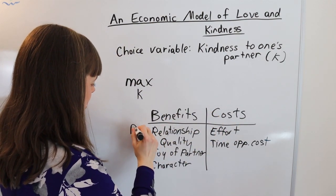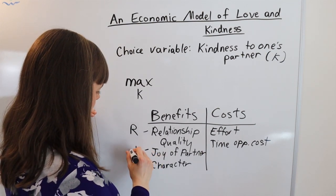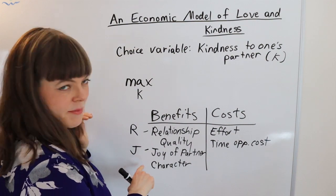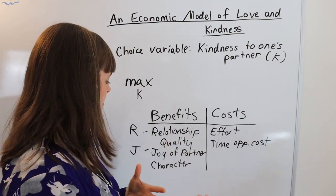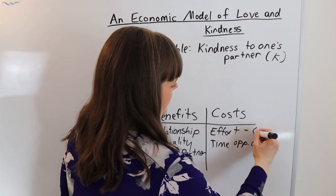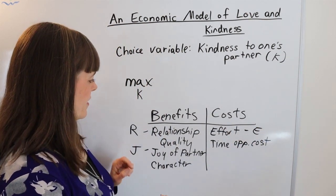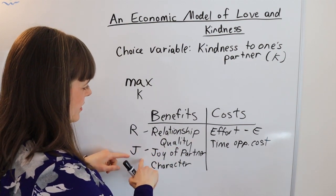I'm going to put relationship quality as one of the main benefits. I'm also going to put joy of your partner in there because I'd like to build in an altruism thing. And of course altruism can relate to character. And the effort cost I think is going to be the biggest cost that I can think of.